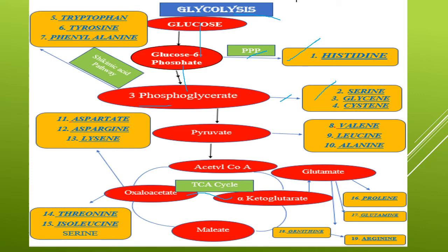This 3-phosphoglycerate also enters into the shikimic acid pathway, and here also three different amino acids are obtained: tryptophan, tyrosine, and phenylalanine. From 3-phosphoglycerate, it is further converted to pyruvate, and from pyruvate again three different amino acids are obtained: valine, leucine, and alanine.